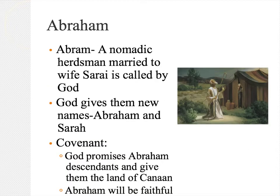First we'll start with Abraham. Abraham wasn't born Abraham — he was born Abram, a nomadic herdsman married to a woman named Sarai, who grew very old without ever having children. He is called upon by God and given a new name, Abraham, and his wife is given the new name Sarah. An agreement, a solemn vow between God and Abraham is formed, known as a covenant.